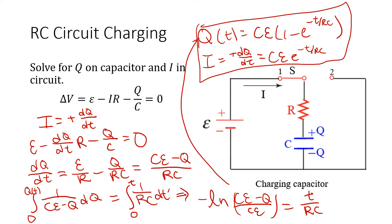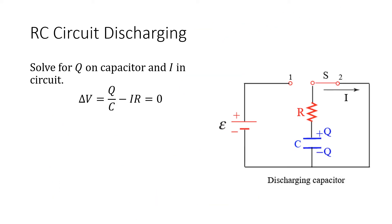For a discharging RC circuit, it's slightly different because now there's no battery. Since it's discharging, the current is actually negative dq/dt. The reason for the negative sign is that the more current there is in the circuit, the less charge remains on the capacitor — the charge is draining and leaving the capacitor.